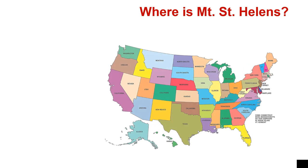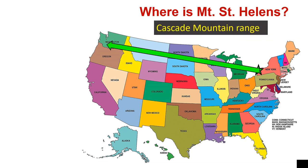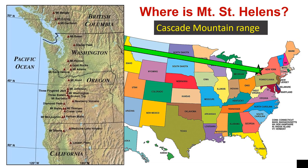Where is Mount St. Helens? Let's take a look at a map of the United States. On the right where the green star is, is where we live in New York State. If you go all the way across the United States to Washington, you will find Mount St. Helens. It's part of the Cascade Mountain Range.